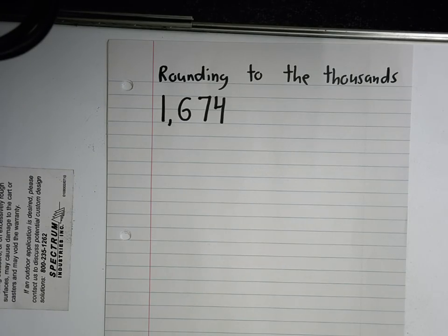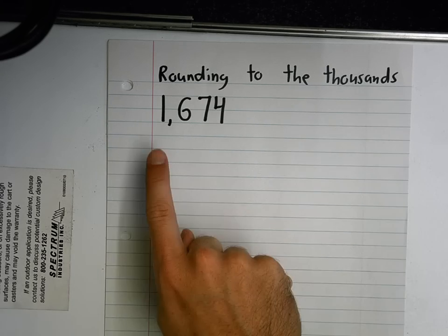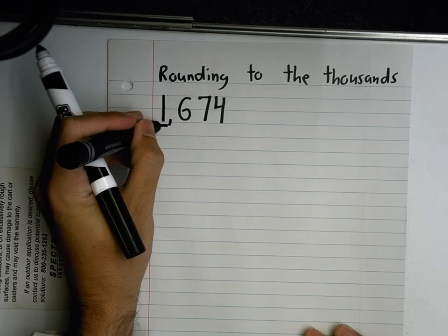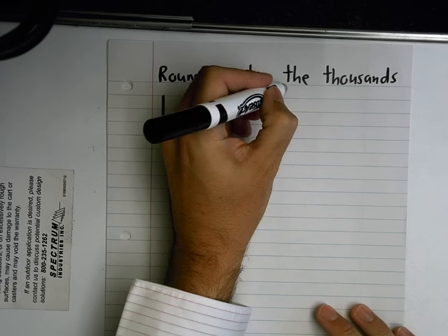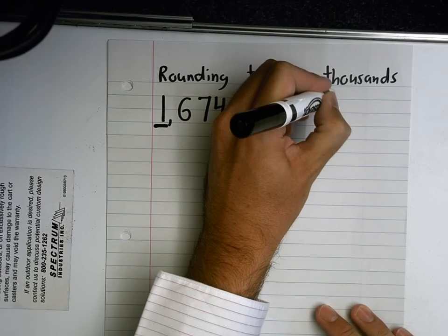When we're rounding numbers, the first thing we need to do is find out what number we're rounding to. This says rounding to the thousands. Which number is in the thousands place? Darian says the one. So my first step is going to be — step one — underline the number we are rounding to.